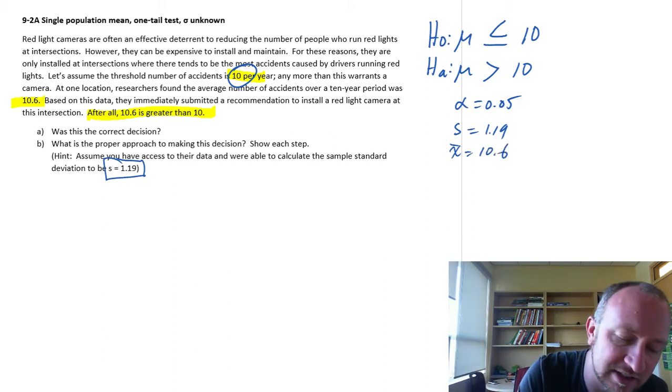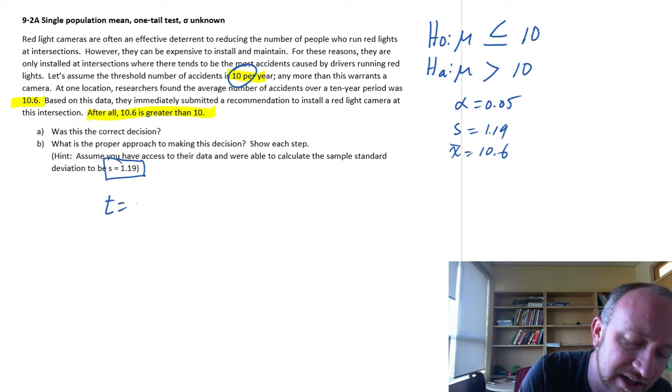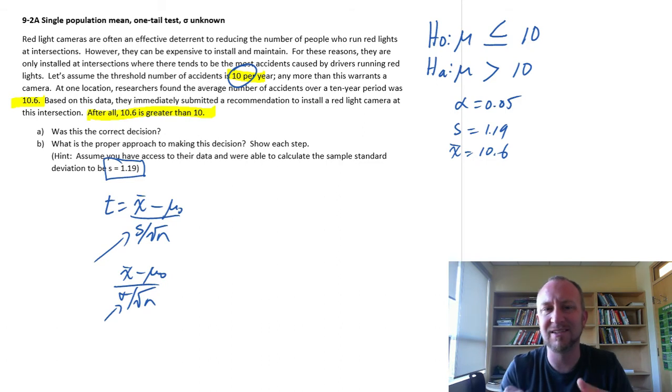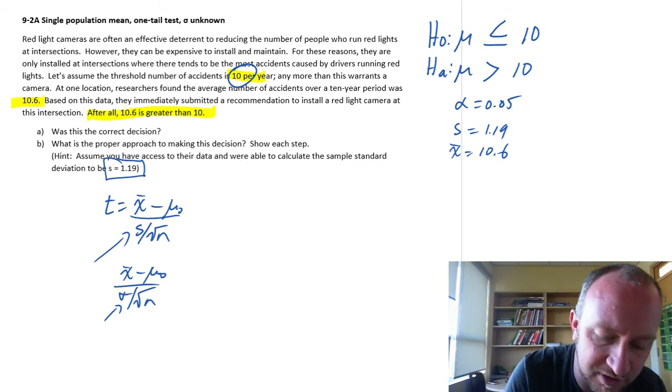So our calculation here for the test statistic, it looks so similar to a z-test that if you were to use the wrong formula, you probably wouldn't even make a mistake. The only difference, of course, is this, right? Here we have sigma. If we know what sigma is, if we don't know what sigma is, we use s. But otherwise, the calculations are going to be the same, as long as you put the right numbers in the right places.